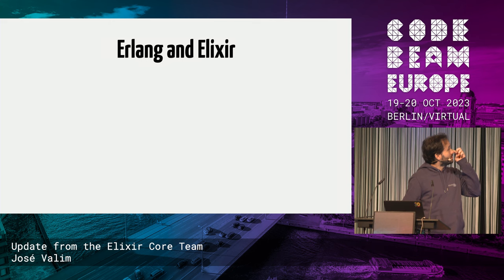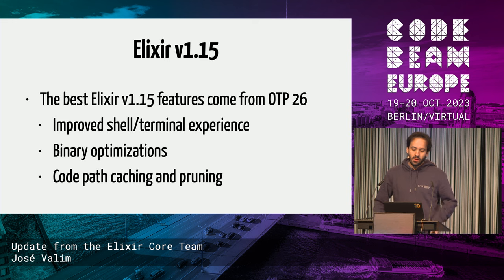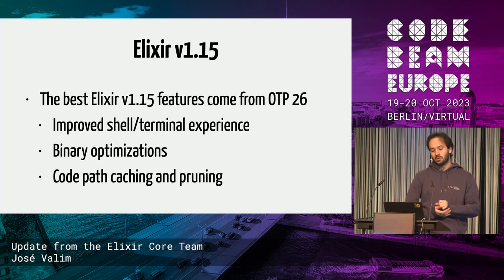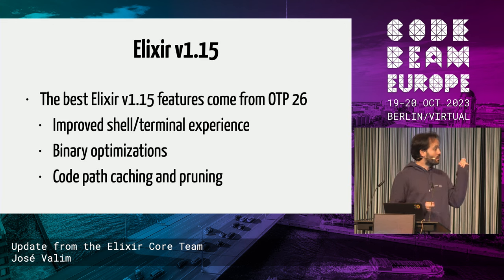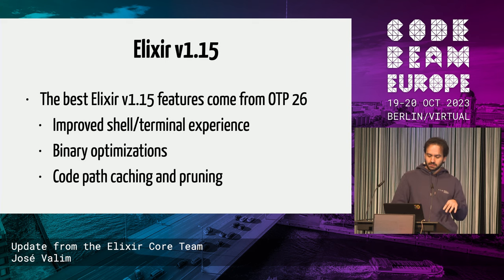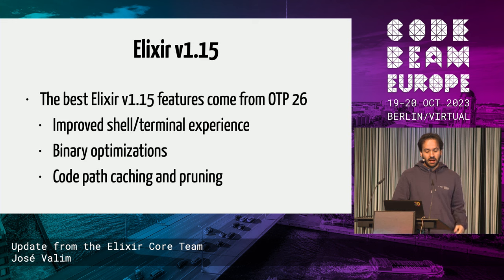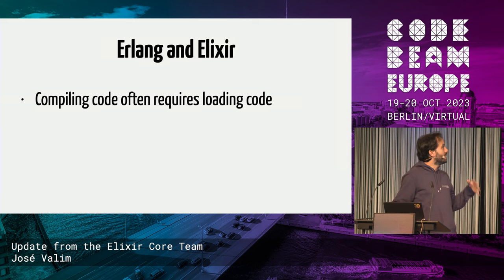One of the things also in OTP 26 — and this was a contribution from the Elixir team — is code path caching and pruning. That's why I want to focus on this in particular when talking about Elixir 1.15, because if you have a large Elixir application, this change is going to be very meaningful.